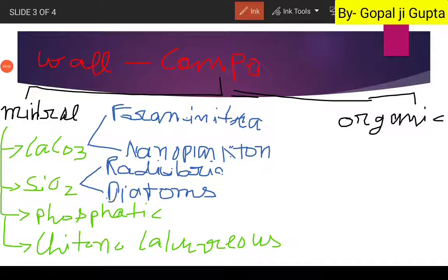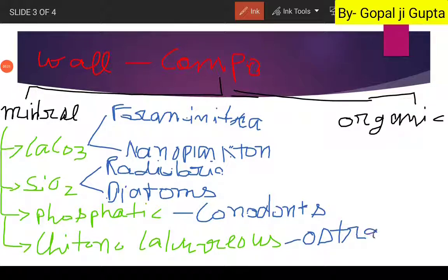Then we have the phosphatic wall composition microfossil, that are Conodonts. Then the last one is our chitinocalcareous wall, and in this the mineral comes are Ostracoda or the Ostracodes.